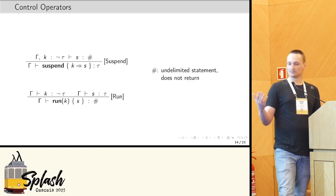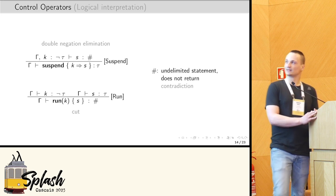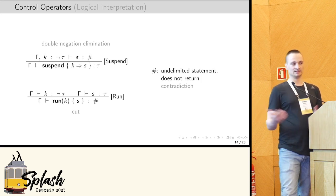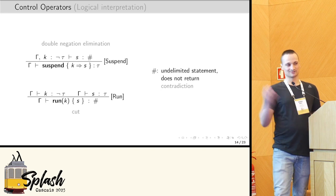Now, as we're in a type setting, we can actually give a logical interpretation to these control operators, and reading this hash here as contradiction, we can see that suspend actually corresponds to double negation elimination, and run simply corresponds to cut. That's just a little aside, right?